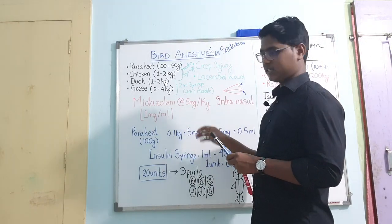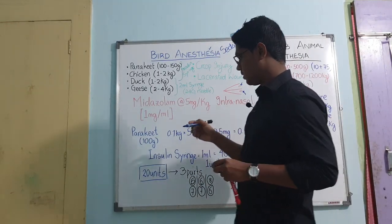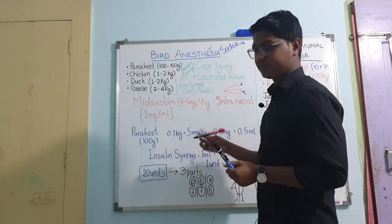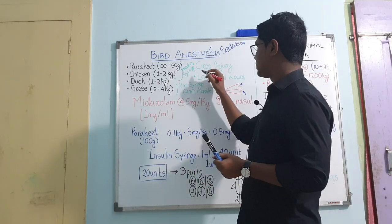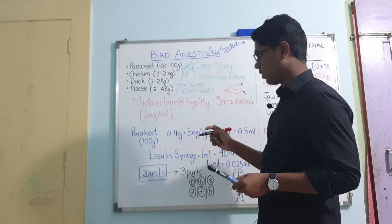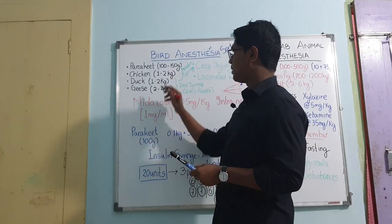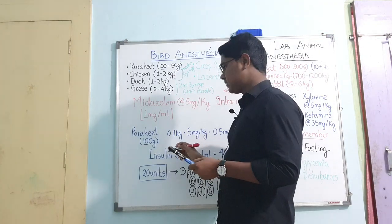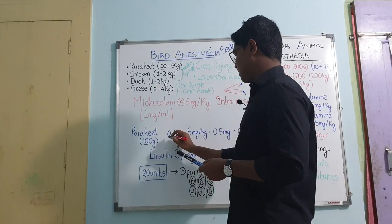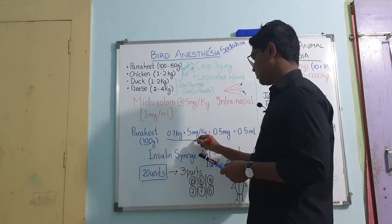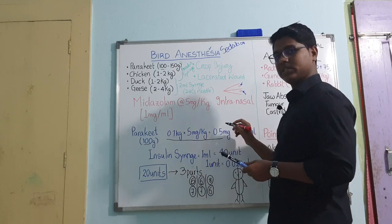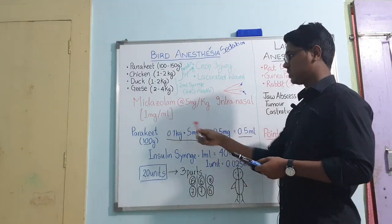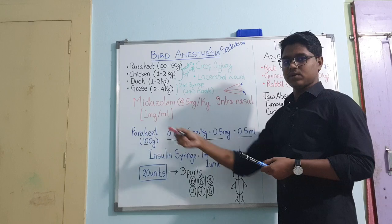By example: suppose a parakeet has been presented to your veterinary dispensary with crop injury and you need to suture the crop. Taking a body weight of 100 grams, the dose calculation gives 0.5 mg, which equals 0.5 ml since the concentration is 1 mg per ml.